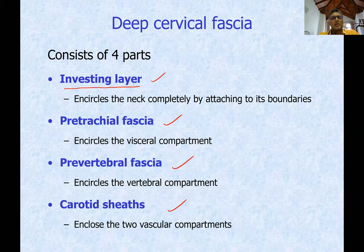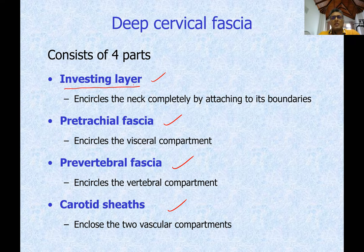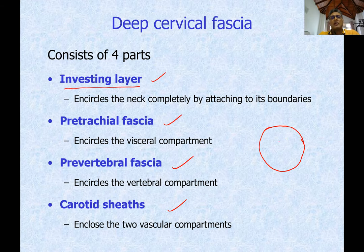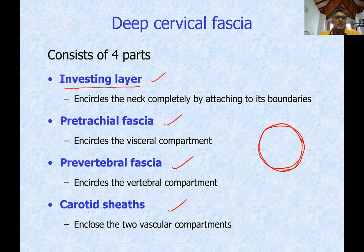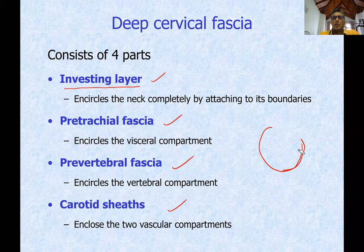The investing layer of deep cervical fascia encircles the neck. Superiorly and inferiorly, it is attached to the boundaries of the neck — the upper and lower boundaries. This investing layer, when it encircles all the contents of the neck, is attached to those upper and lower boundaries, so it completely encircles the neck. In certain places it goes slightly beyond those boundaries.